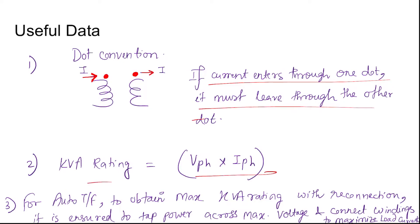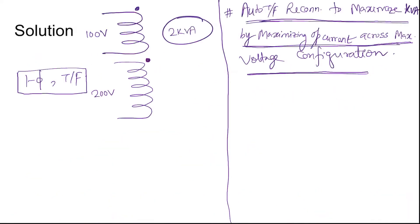The kVA rating is calculated as V_phase times I_phase. Third thing you need to know: for auto-transformer to obtain maximum kVA rating, you need to reconnect the winding in such a fashion that the output current is maximum, and the tapping must be across the maximum voltage configuration such that both parameters maximize and you get maximum kVA.